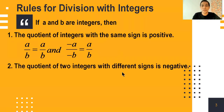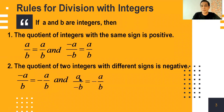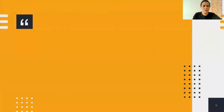Rule two: the quotient of two integers with different signs is negative. If negative a is divided by positive b, the quotient is negative a over b. Or if a is positive and b is negative, the quotient is also negative. When dividing integers with different signs, the quotient is always negative.